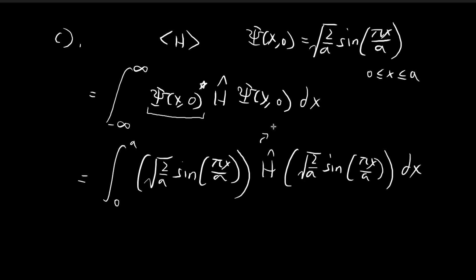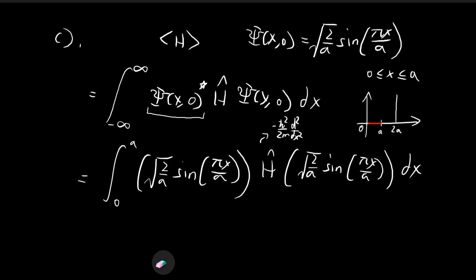For the Hamiltonian operator, it's given by the expression involving d²/dx². We also have a term for the potential, but recall that since we're dealing with an infinite square well of width 2a and integrating only over the region from 0 to positive a, the potential is just equal to 0 in this region, so I can omit it. So this gives us our Hamiltonian. All we have to do is apply the double derivative along with the constants to the wave function, multiply the two terms together, take the integral, and get the expected value.